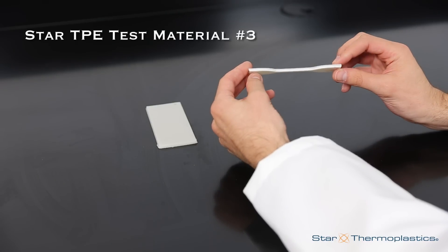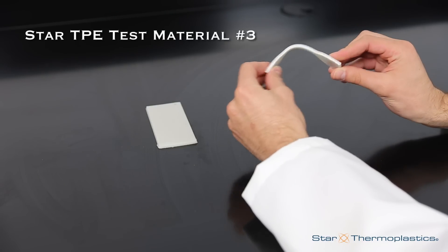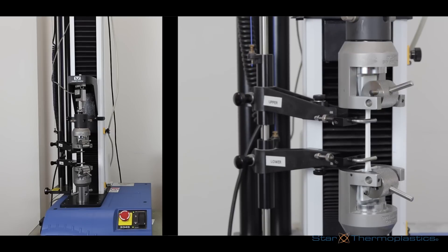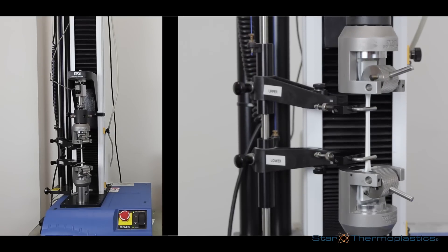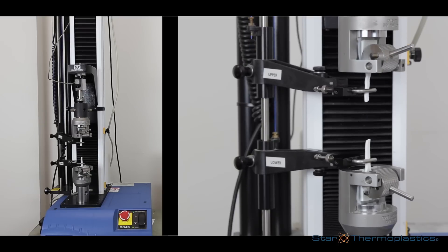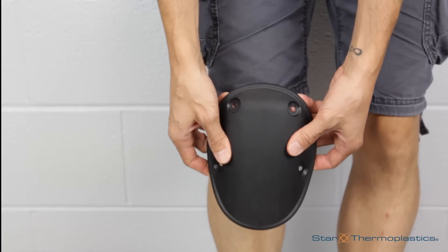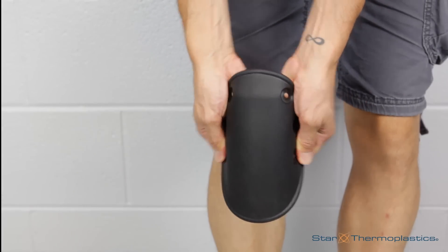And lastly, here's the relatively rigid star TPE material. It doesn't stretch much, but it has a high tensile strength, meaning it won't break easily either. We've seen these properties work well for applications like knee pads and roof flashing.